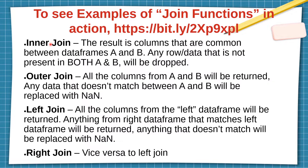With an inner join, columns that are common between dataframes A and B will be returned, and any row or data not present in both A and B will be dropped. With an outer join, all columns from A and B will be returned and any data that doesn't match will be replaced with NaN. With a left join, all columns from the left dataframe will be returned; anything from the right dataframe that matches will be returned, and anything that doesn't match will be replaced with NaN. A right join is the vice versa of a left join.